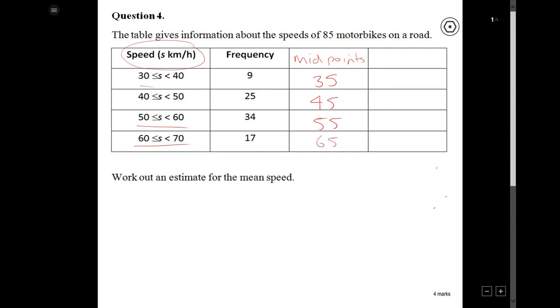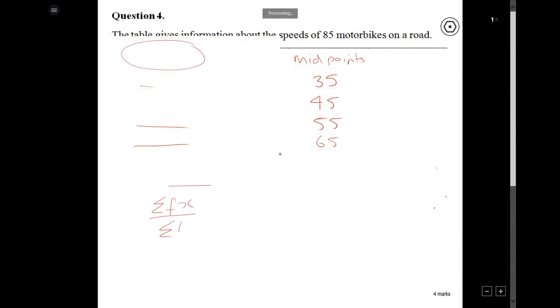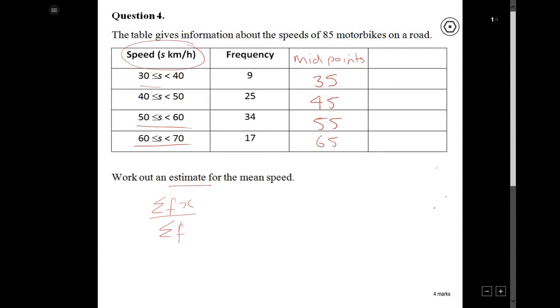Now, if you look at the book or on the internet, there is a formula. And they say that the estimated mean, which is what we're doing, is given by sigma fx over sigma f. Sigma is just a Greek word for total. And so this is the total of fx divided by the total of f. So the total of f is the total of your frequencies, which is this bit over here. So we can add them all together, but sometimes in the question, it tells you how many things or how many people are in your survey. So over here, we've got 85.